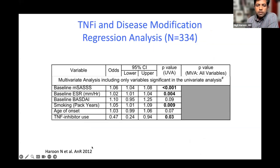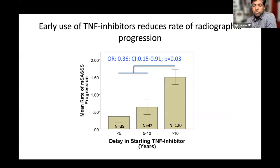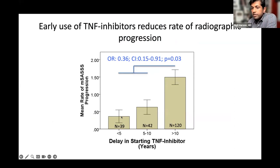Our North American study was the first to show that TNF inhibitors reduce the rate of radiographic progression in spondyloarthritis — with more than 50% decreased risk of progression. Importantly, when you start TNF inhibitors matters: starting within the first five years was associated with much lower progression rates compared to starting after 10 years, again emphasizing the window of opportunity.